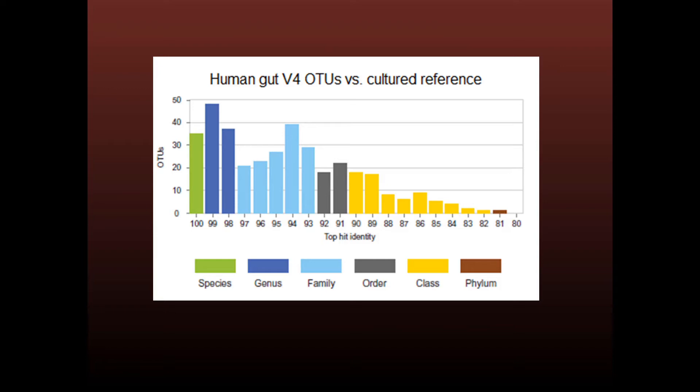As an example, here is the top hit identity distribution for human gut OTUs made with V4 sequences by comparison with the RDP training set. The distribution is skewed towards higher identities because human gut is a well-studied environment and therefore contains many named groups. Histogram bars are colored according to the most probable lowest common rank. For example, the dark blue bars have 98% and 99% identity where the OTUs most likely belong to a novel species in a known genus and the LCR is therefore genus.